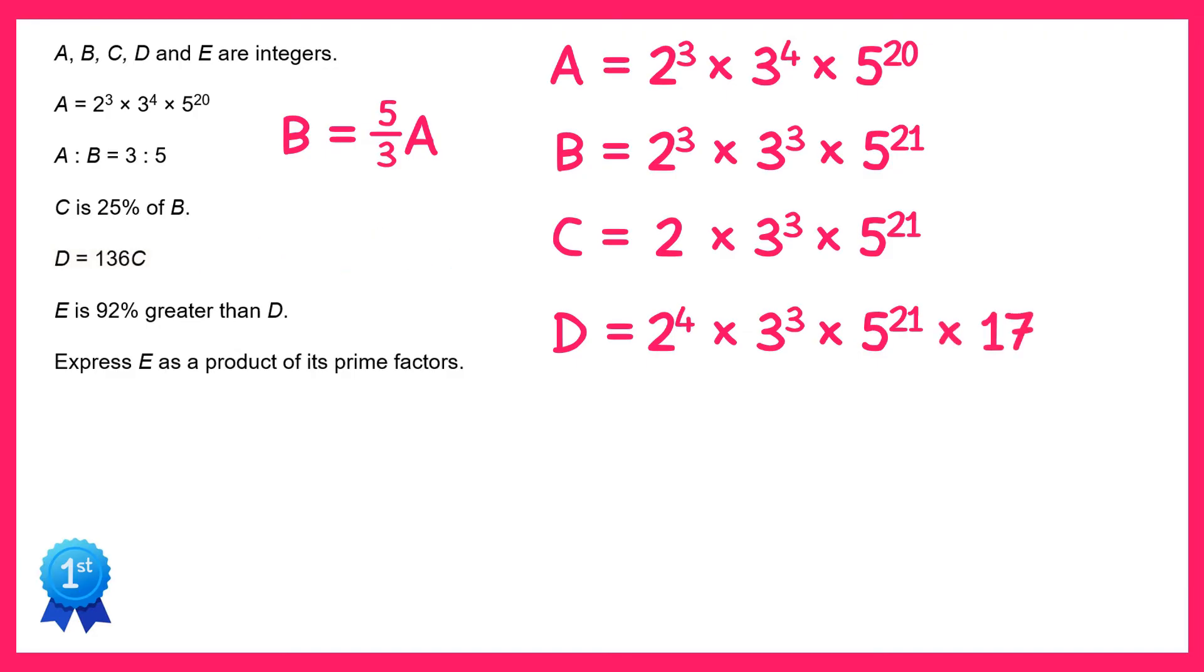And on to the final part. We're told E is 92% greater than D. So to get E I'll start with D and multiply it by 192 over 100. Which we could write like this.